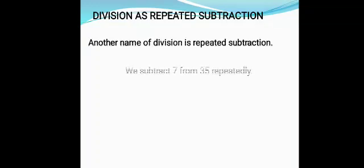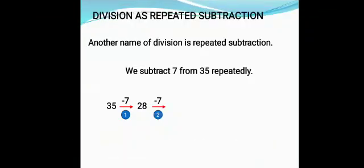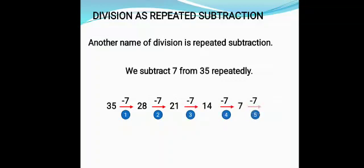Division as repeated subtraction. We know that division is also known as repeated subtraction. For example, 35 divided by 7 is equal to 5. Here we will subtract 7 repeatedly from 35 until we get 0. First we subtract 7 from 35, we get 28. Now subtract 7 from 28, we get 21. Subtracting 7 from 21 we get 14. Now subtract 7 from 14 we get 7. And subtracting 7 from 7 we get 0.